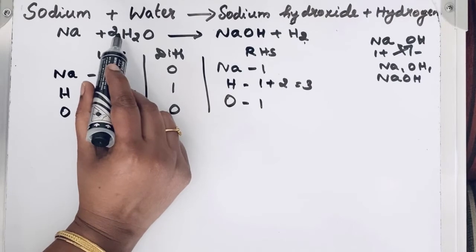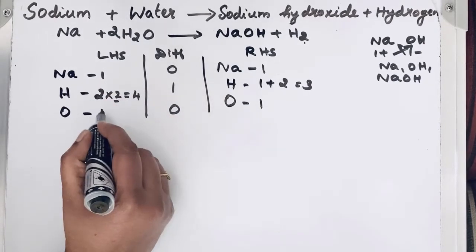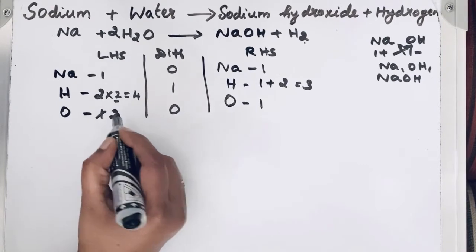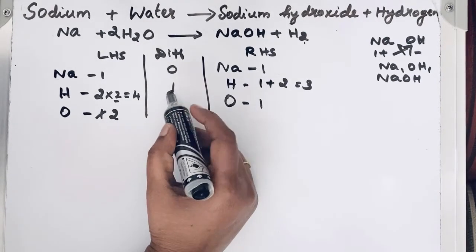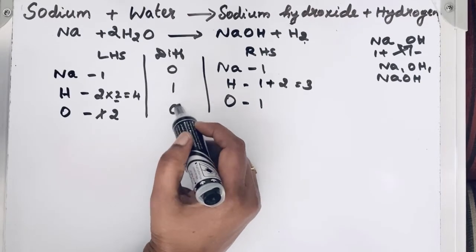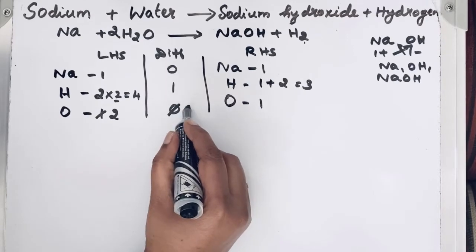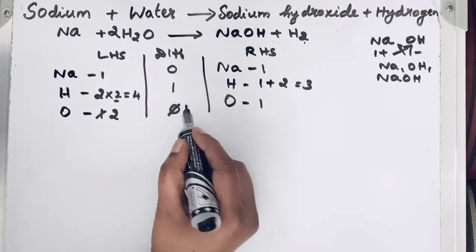So now you can see, when you write 2, the number of oxygen atoms also is changing. So we will cut 1 and we will write 2. Now, find the difference. You can see, the difference is same for hydrogen. But for oxygen, there is a change in difference. So we cut 0 and we will write 2 minus 1, 1.